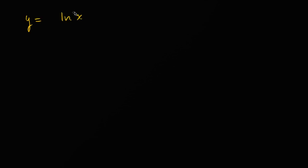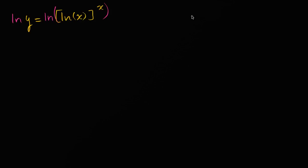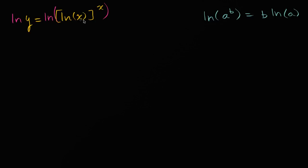Let me rewrite this with a little bit of space: natural log of x to the x-th power. The first thing I want to do is get rid of this x as an exponent, and I want to be able to apply the product rule. The way we're going to do that is by taking the natural log of both sides. If I have the natural log of a to the b power, this is the same thing as b times the natural log of a — that's just a standard logarithmic property.